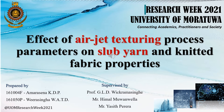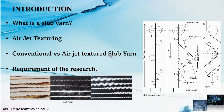Good evening everyone. In this presentation we are going to explain our final year research project: investigation of the effect of air jet texturing process parameters on slab yarn and knitted fabric properties. A slab yarn can be described as a thick place in a yarn, and it can also be considered as a defect in a uniform yarn, but it is widely used for aesthetic purposes in the textile industry.